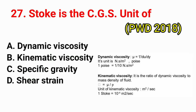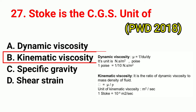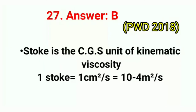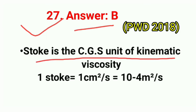Question No. 27. Stoke is the CGS unit of? Correct answer is option B: kinematic viscosity. One stoke = 1 cm²/s = 10⁻⁴ m²/s.